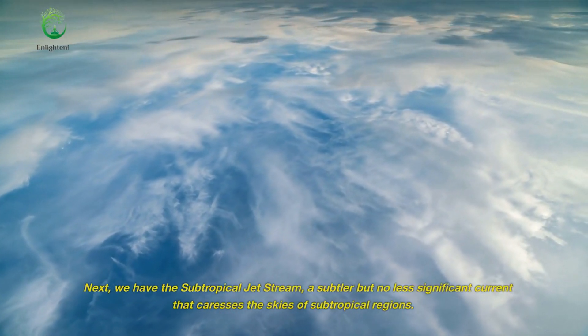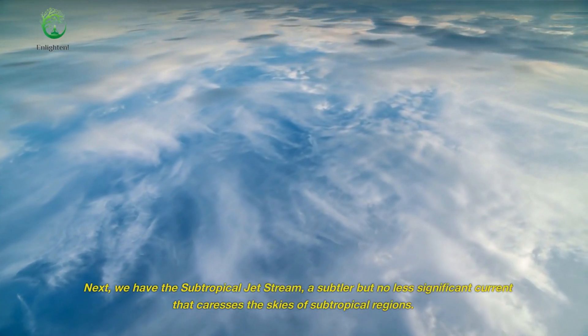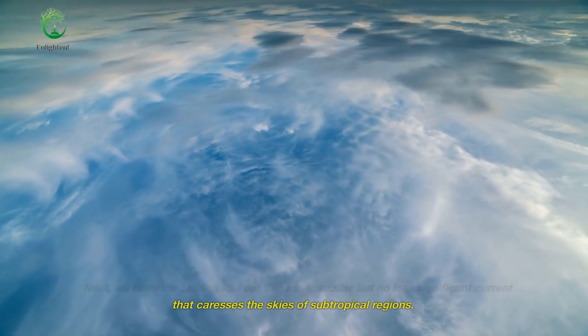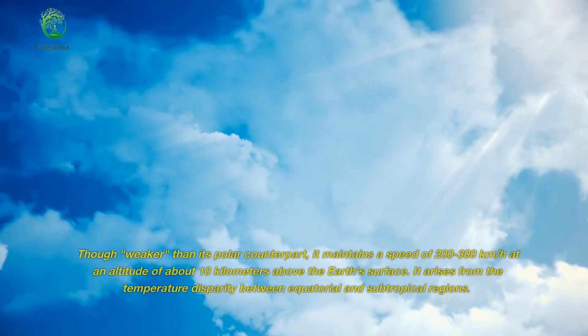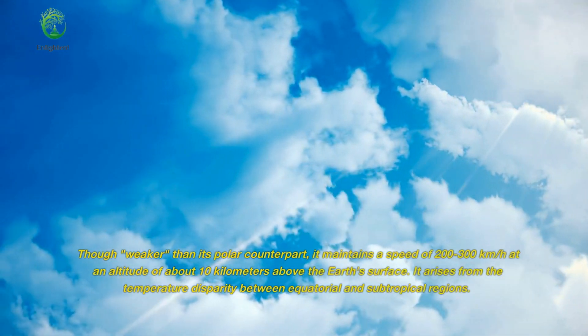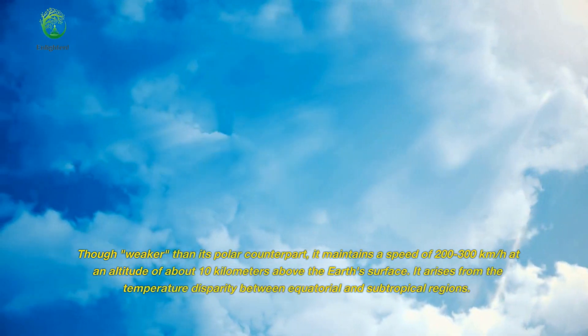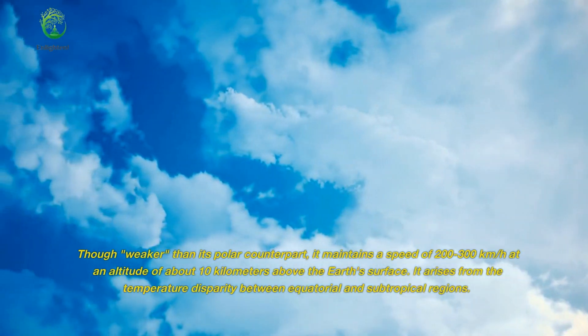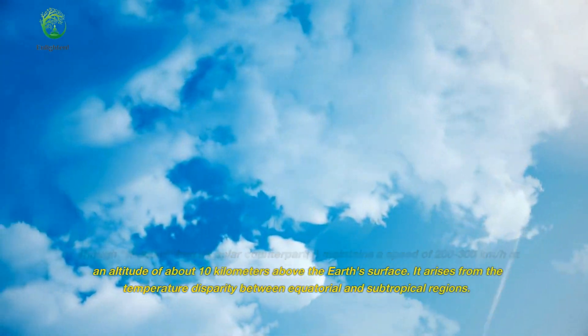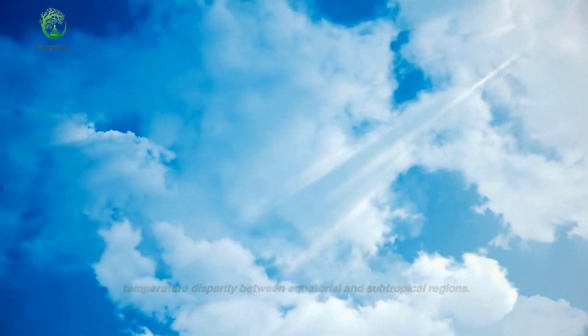Next, we have the subtropical jet stream, a subtler but no less significant current that caresses the skies of subtropical regions. Though weaker than its polar counterpart, it maintains a speed of 200 to 300 kilometers per hour at an altitude of about 10 kilometers above the Earth's surface. It arises from the temperature disparity between equatorial and subtropical regions.